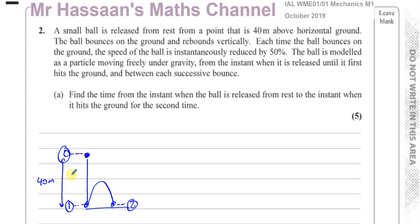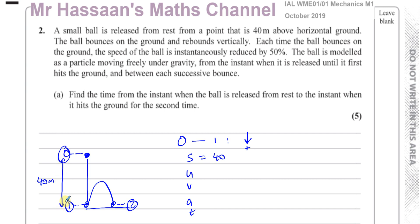Looking at between points 0 and 1, let's write down SUVAT. One thing to take into account is direction. Between 0 and 1, the ball has been released and its initial movement is downwards, so I'm going to take down as positive. That means S is positive 40 because it's 40 meters down, and U is 0 because it's released from rest. V we don't know — that's the speed with which it hits the ground.